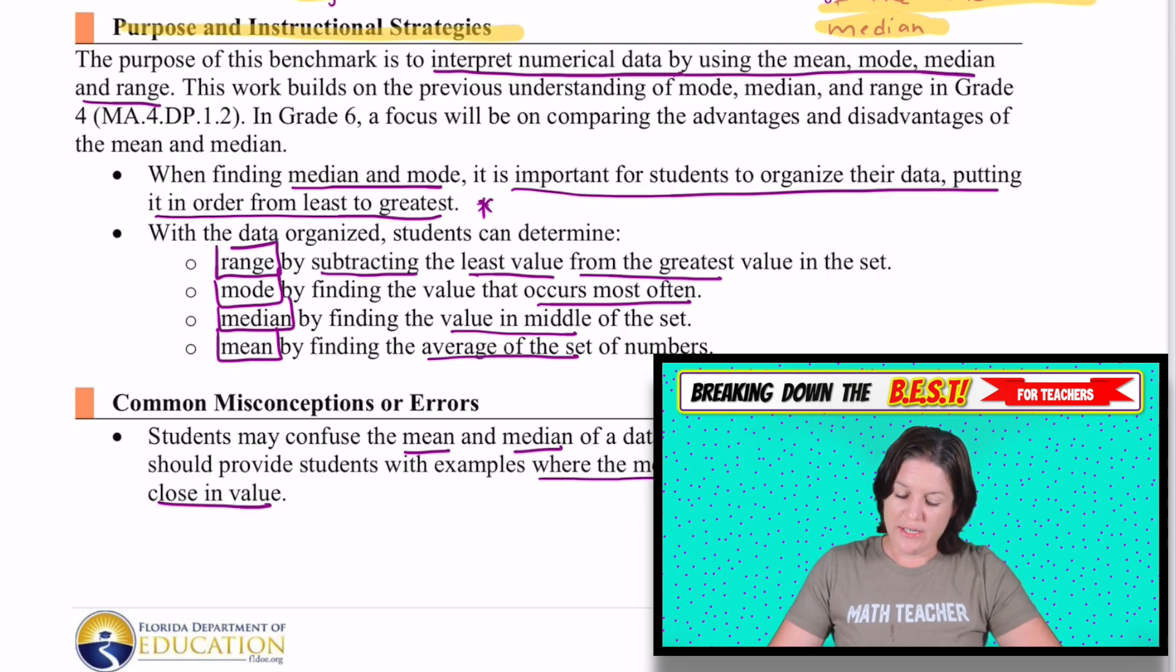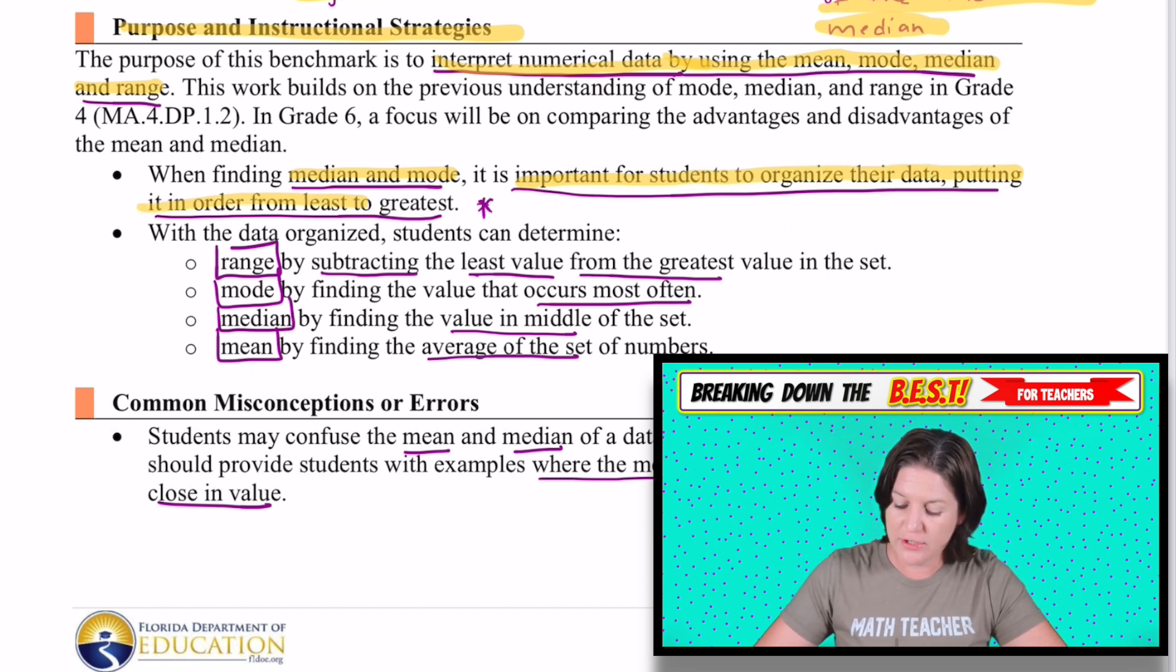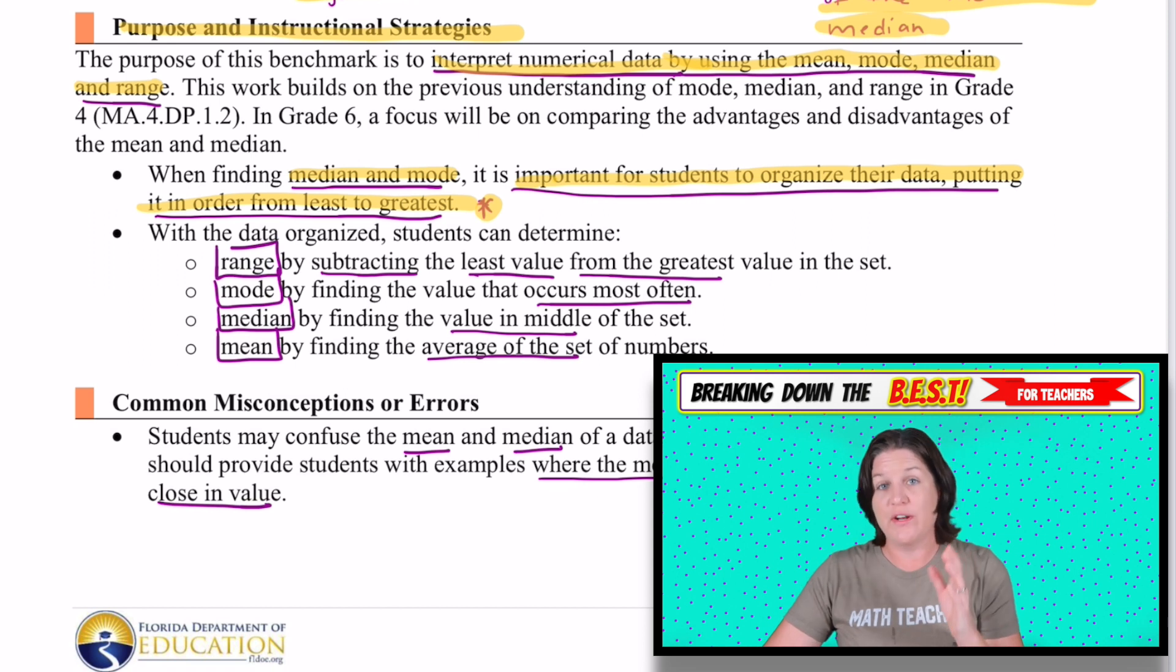For the purpose and instructional strategy section, let's see what jumped out at me. It says that the purpose of this benchmark is to interpret numerical data by using the mean, mode, median, and range. When finding the median and mode, it is important for students to organize their data by putting it in order from least to greatest. I put a star here because this is huge. It's very important that it's put into order from least to greatest. And when it's found on a line plot, it kind of already is in order from least to greatest, which is helpful.